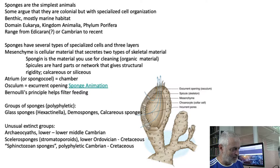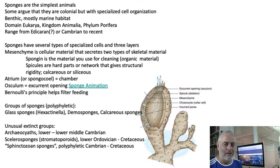Sponges have these special layers. The layers include things like the mesohyl — that's the material that makes the skeletal material you feel in a sponge. Spongin is the organic material you can feel. They do sometimes have hard parts as well, called spicules. Spicules give it a cellular structure; they are secreted by the mesohyl in order to build structural support. That gives them some rigidity so they can stand upright off the seafloor.